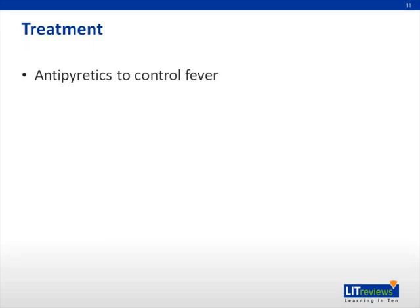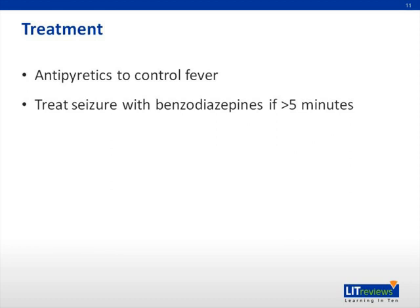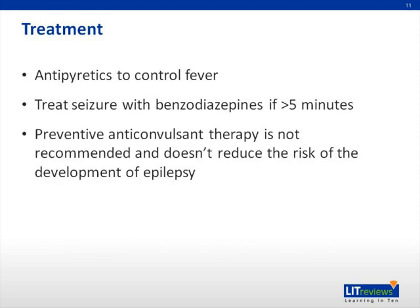Treatment of febrile seizures mostly consists of using antipyretics to control the fever. Any seizure that lasts more than five minutes or results in compromise of the circulatory or respiratory systems should be treated with benzodiazepines. Preventive anticonvulsant therapy is not recommended and does not reduce the risk of development of epilepsy. Of note, oral diazepam administered during the first few days of a febrile illness does reduce the recurrence of febrile seizures. In general, the consensus is that the benefits of anti-epileptic drug therapy in preventing recurring febrile seizures are outweighed by their numerous potential side effects.